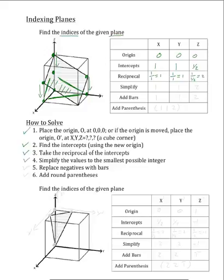Now the next step is to simplify these numbers to the smallest possible integer values. As you can see, 1, 1, and 2 are already at their smallest possible integer values, so we do not have to change the numbers at all. Now the next step is to replace any negative signs with bars. We can leave the numbers the same because there are no negative signs in front of them. For our final answer, we will add the round parentheses: (1 1 2), and that will be our final answer.